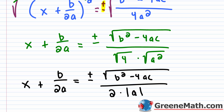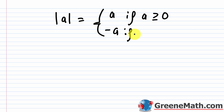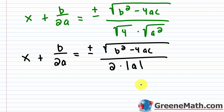The square root of 4 is 2, and the square root of a² is actually the absolute value of a. The absolute value of a equals a if a ≥ 0, or −a if a < 0. However, because we already have the plus or minus out front, we can just drop the absolute value bars and write 2a — the ± accounts for both cases.